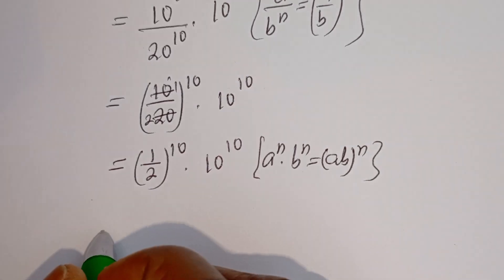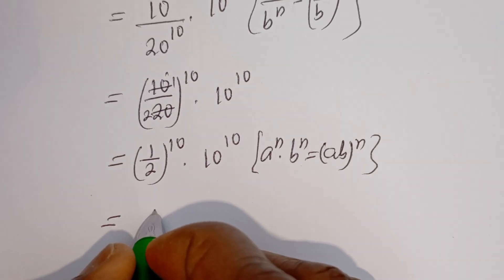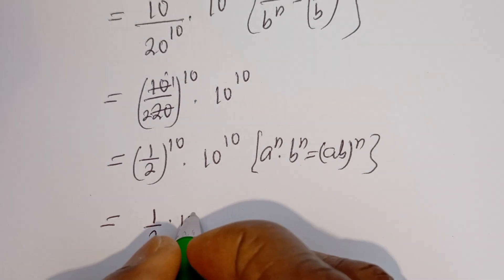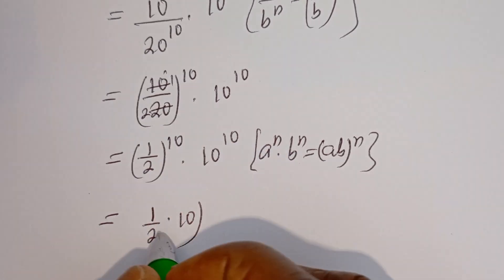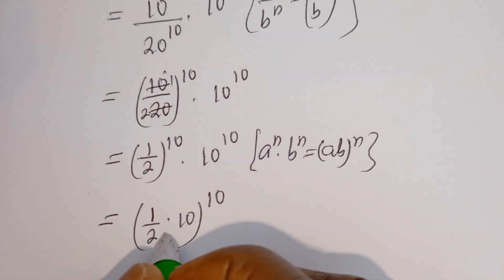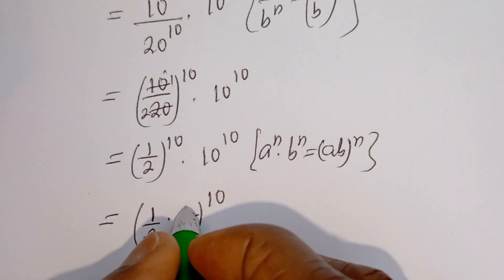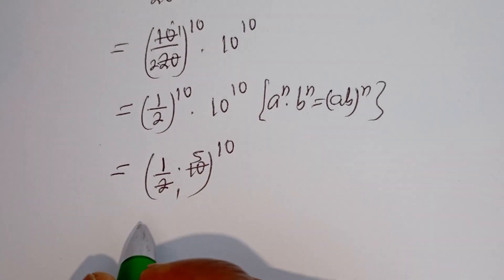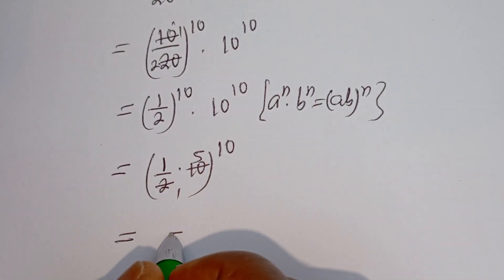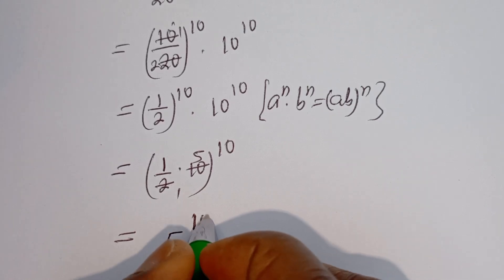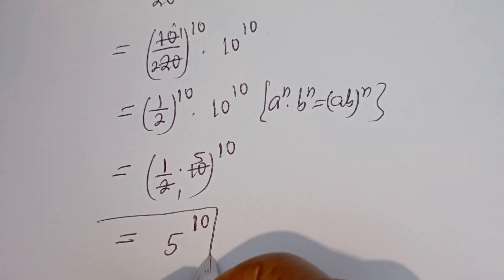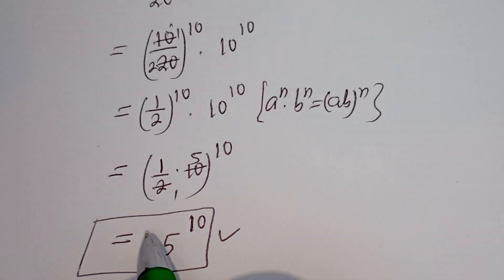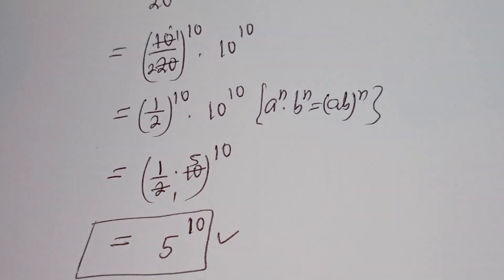Then this can be written as 1 over 2 multiplied by 10, because of the same power of 10, giving us 5 to the power of 10. So this is equal to 5 to the power of 10, and this is the final answer from the first method. Now let's consider the second method.